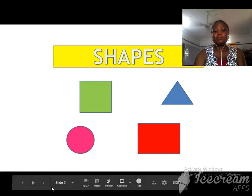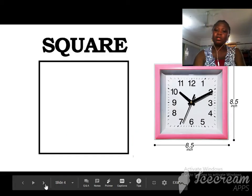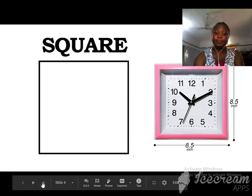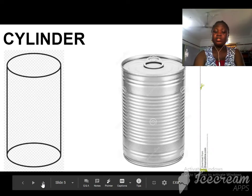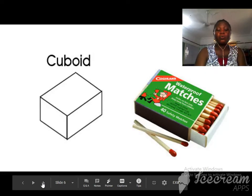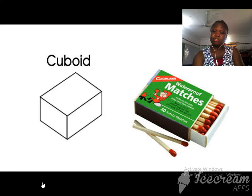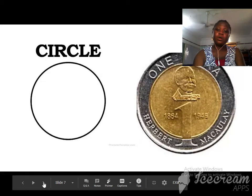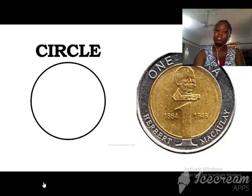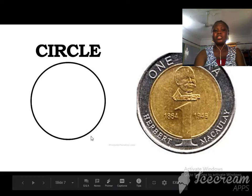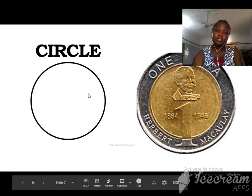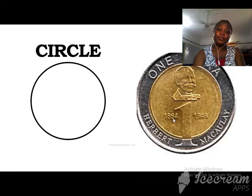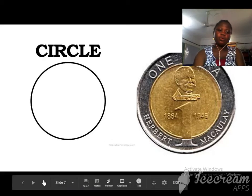We can construct a clock using a square shape. We can construct a can using a cylinder shape. We can also construct a coin using a circle shape. This is a shape and this is the object. This is the shape and this is the object we constructed.